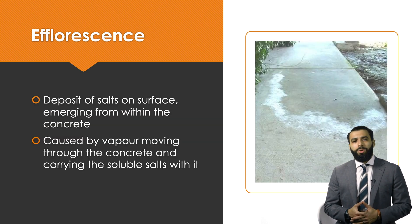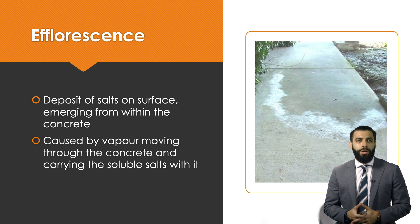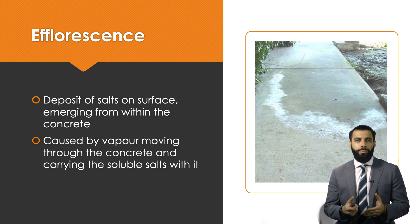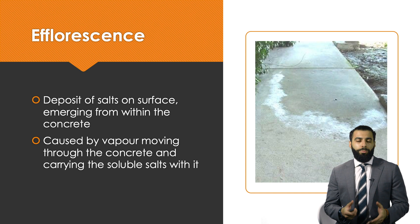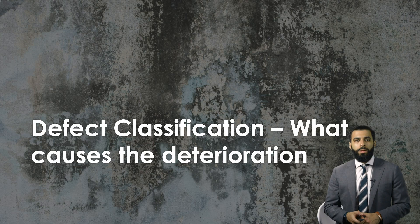Efflorescence is a defect where a white surface develops on the concrete member, as visible in the image. This happens because deposits of salts already present in the concrete mix move upwards toward the surface through water vapor. As the water vapor evaporates and moves through the concrete, it carries the salts with it, which are then deposited on the surface, creating that characteristic white appearance.